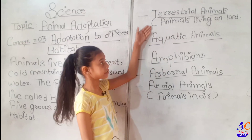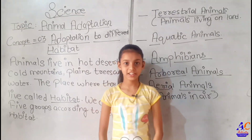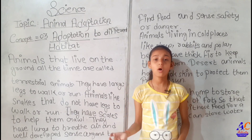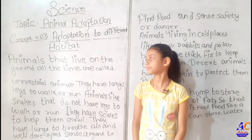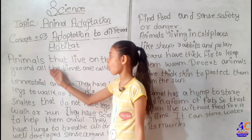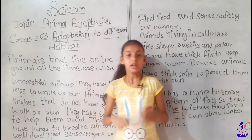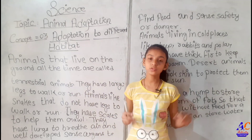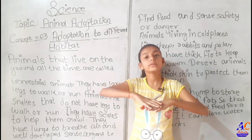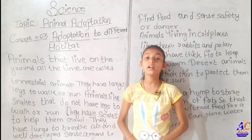Let's first understand terrestrial animals — animals living on land. Animals that live on the ground all the time are called terrestrial animals. They live on land.